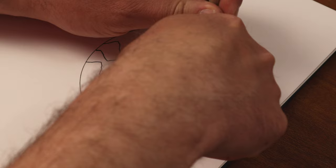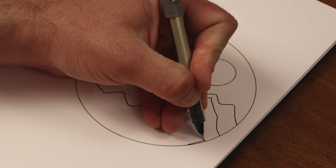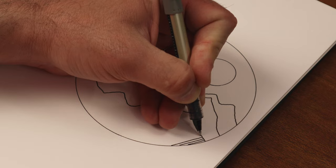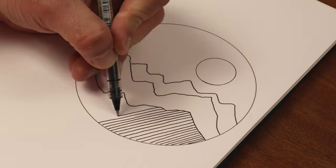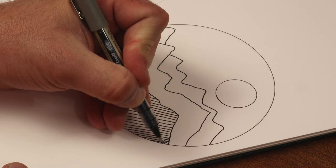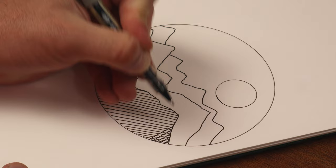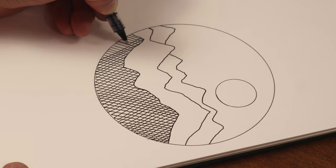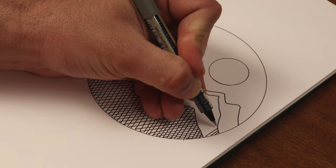The bottom mountains are the closest to us so we need them to be the darkest. For this, I will use cross hatching. The middle mountains need to be a little lighter, so for this, I will use regular hatching.